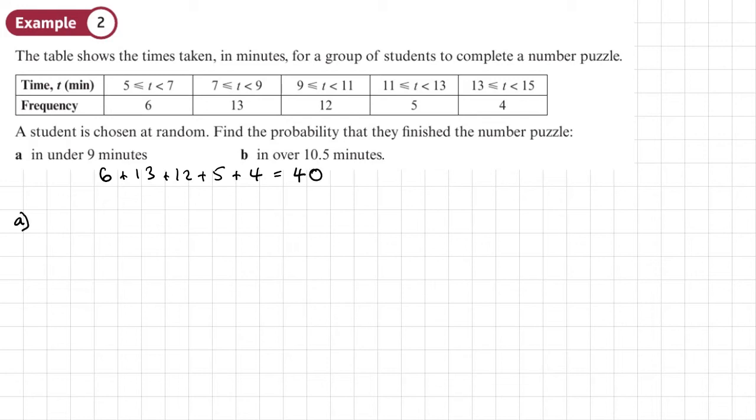So part a, we know it's going to be something over 40. Under nine minutes—that's going to be the 6 here and the 13 here, and that's all of the 13 because this is less than 9, so this is under nine minutes. So 6 plus 13 over 40, which gives us a final answer of 19 over 40.